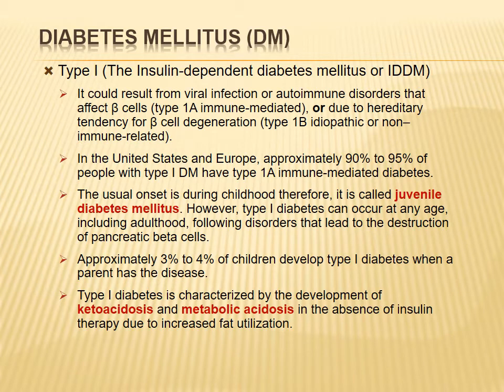Research shows only 3–4% of children with Type 1 diabetes have parents who also have diabetes, which is statistically insignificant. So it is not necessary for the parents to be diabetic for the condition to appear in children — it can occur spontaneously.